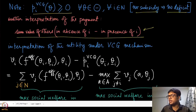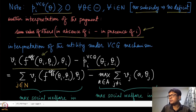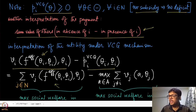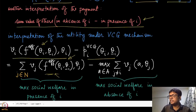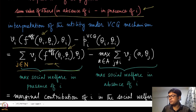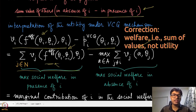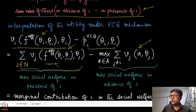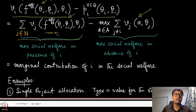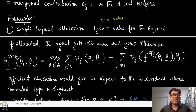You can also interpret the utility under the VCG mechanism. Taking the valuation of agent i at the efficient allocation and subtracting the payment, and reorganizing terms, the first term becomes the sum of valuations of all agents including agent i at the efficient allocation — the maximum social welfare with agent i present. The second term is the maximum social welfare without agent i. So each agent's utility equals its marginal contribution to social welfare.